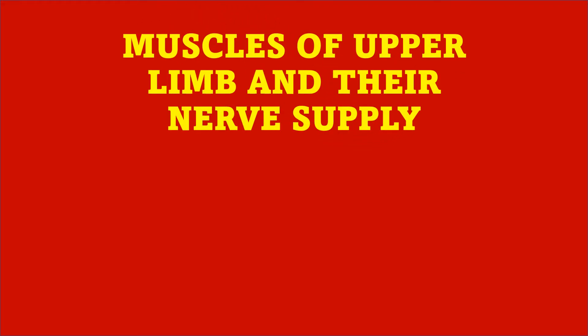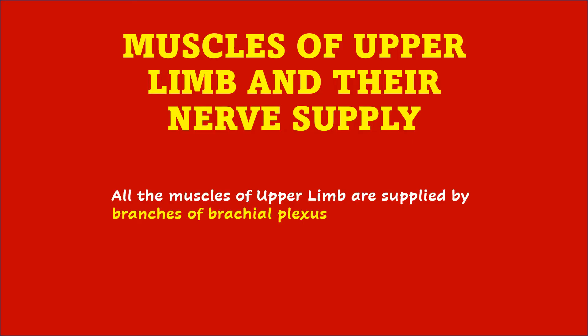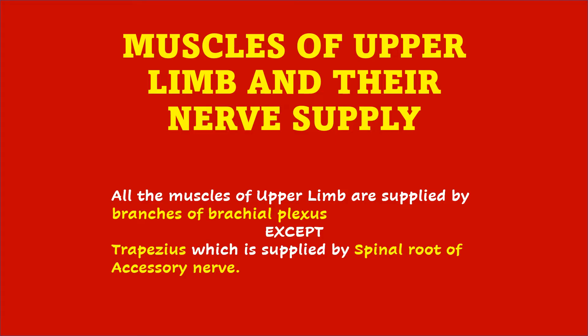Hello friends. This video is on muscles of the upper limb and their nerve supply. All the muscles of the upper limb are supplied by branches of the brachial plexus, except trapezius which is supplied by the spinal root of the accessory nerve.